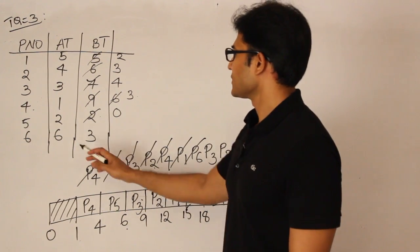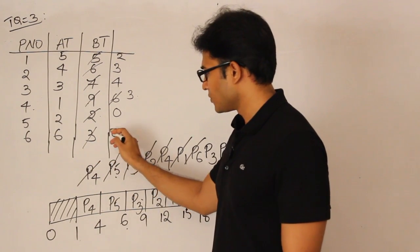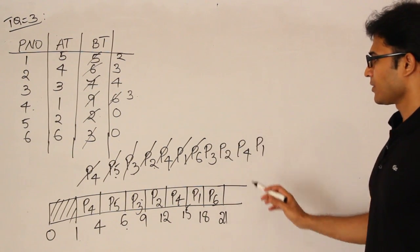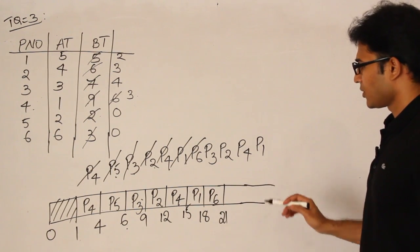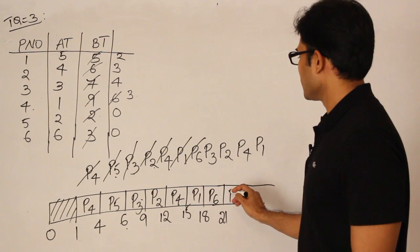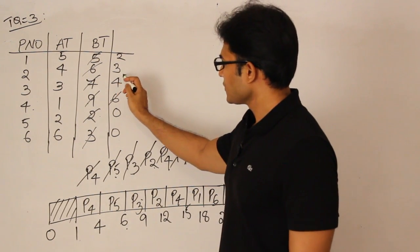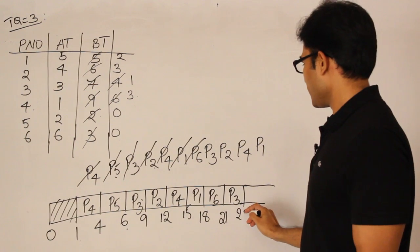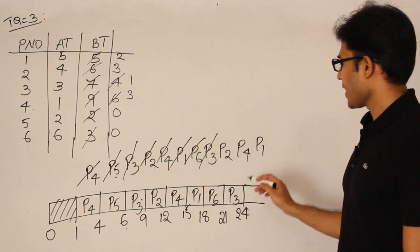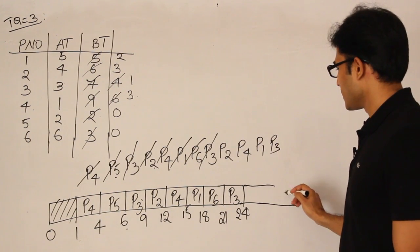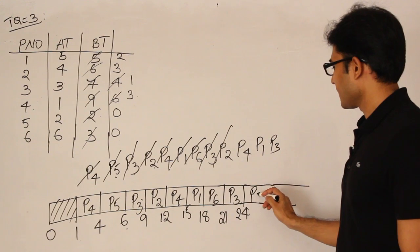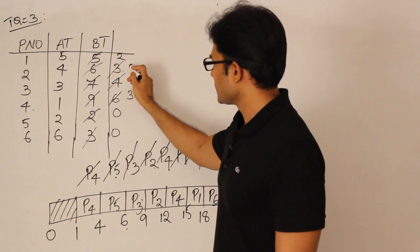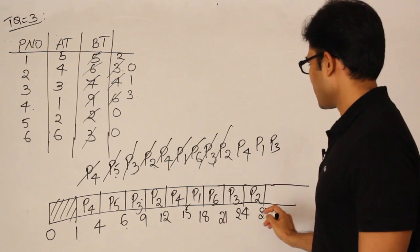Next is P6, which needs exactly 3 units, so it runs to completion at time 21. P6 is not added back. Then P3 is taken out — it needs 4 more units, but we can only run 3, so remaining time becomes 1. P3 runs until 24 and is added back to the queue. Next is P2, which needs exactly 3 more units, so it runs to completion at time 27.